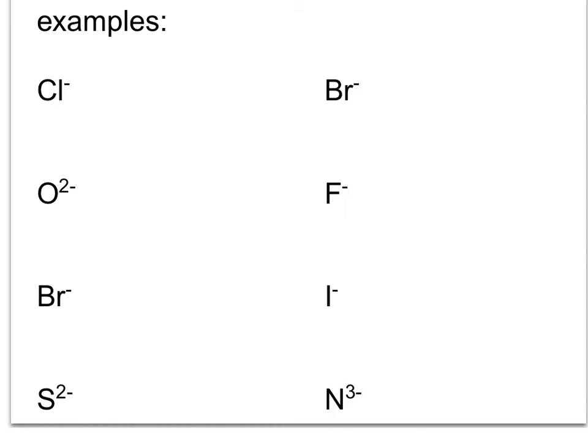Here are some examples of some monatomic anions. Monatomic meaning one atom. For example, notice here's chlorine with a 1- charge on it. This becomes chloride. Oxygen, take the root name, drop the ending. O2- is referred to as oxide. Bromine with a 1-, you drop the ending and it becomes bromide. Sulfur with a 2-, you drop the ending, change it to '-ide.' Sulfide.